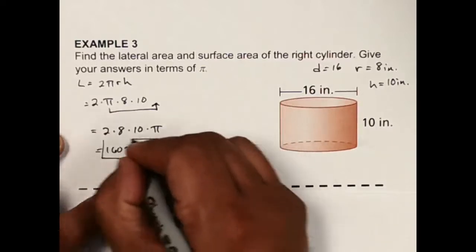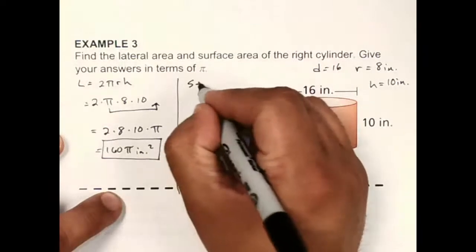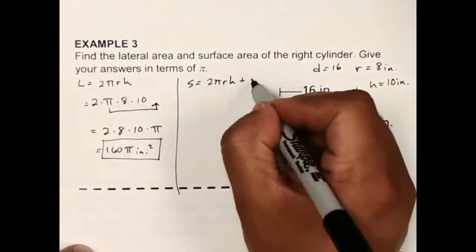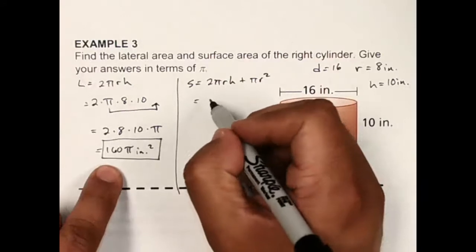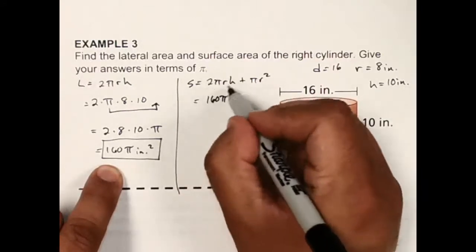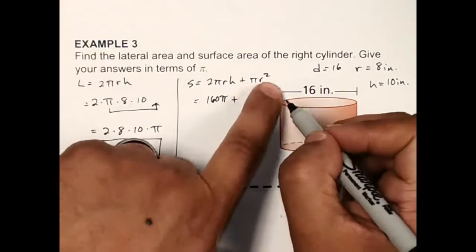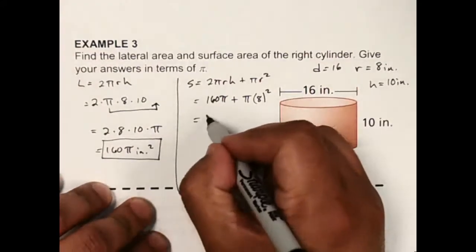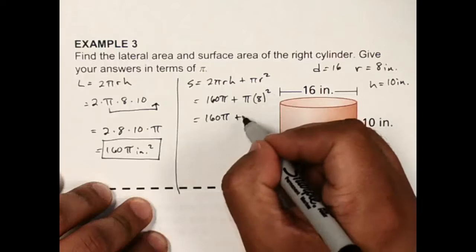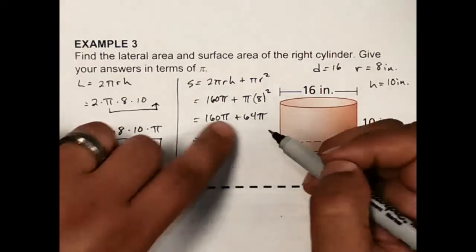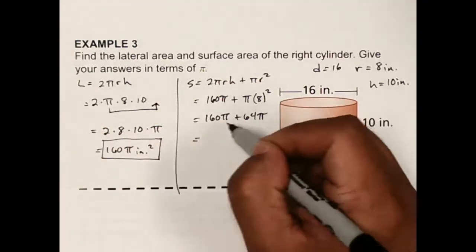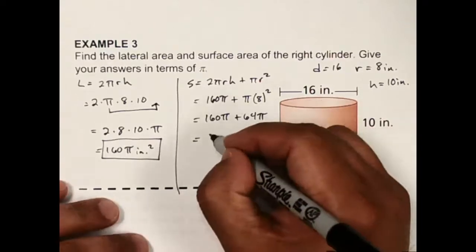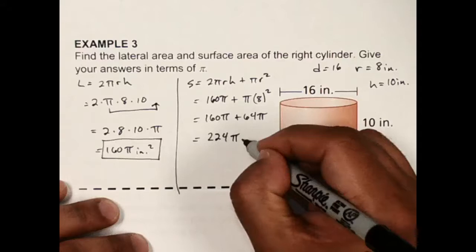Now I need to find the total surface area, which is 2πrH plus 2πr squared. I can substitute 160π for the first term, then plus π times 8 squared. Rearranging: 160π plus 64π. I can combine those because they share the pi symbol, and that comes out to be 224π inches squared — that's my total surface area.